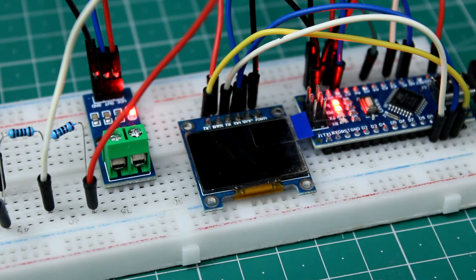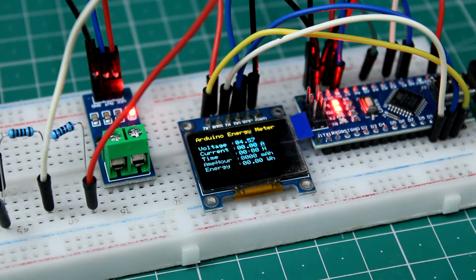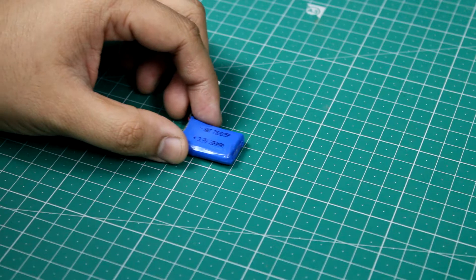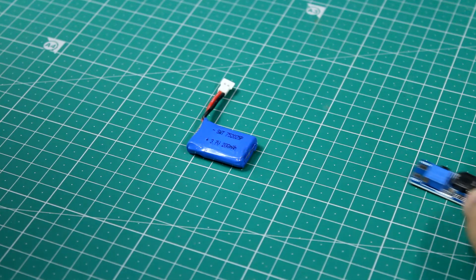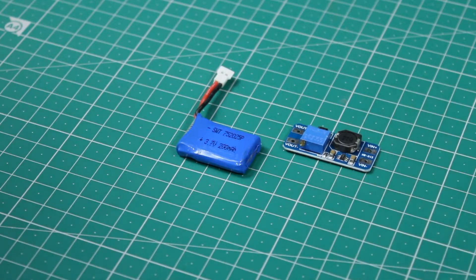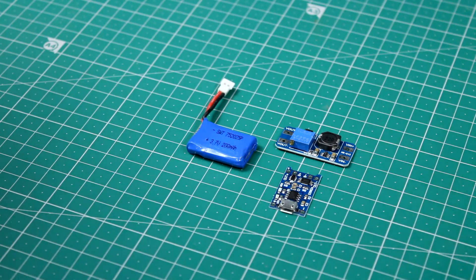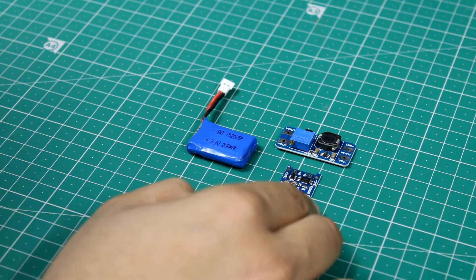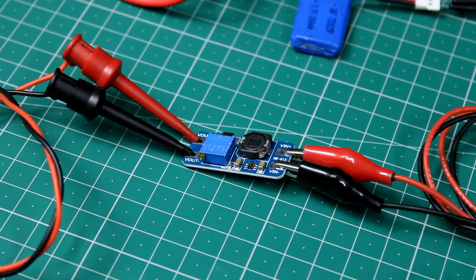To power the device I added a small 3.7 volt LiPo battery. I used this MT3608 step up boost module to step up the 3.7 volts from the battery to 5 volts, and a TP4056 module to charge the battery. Set the MT3608 output voltage using the potentiometer for 5 volt output.